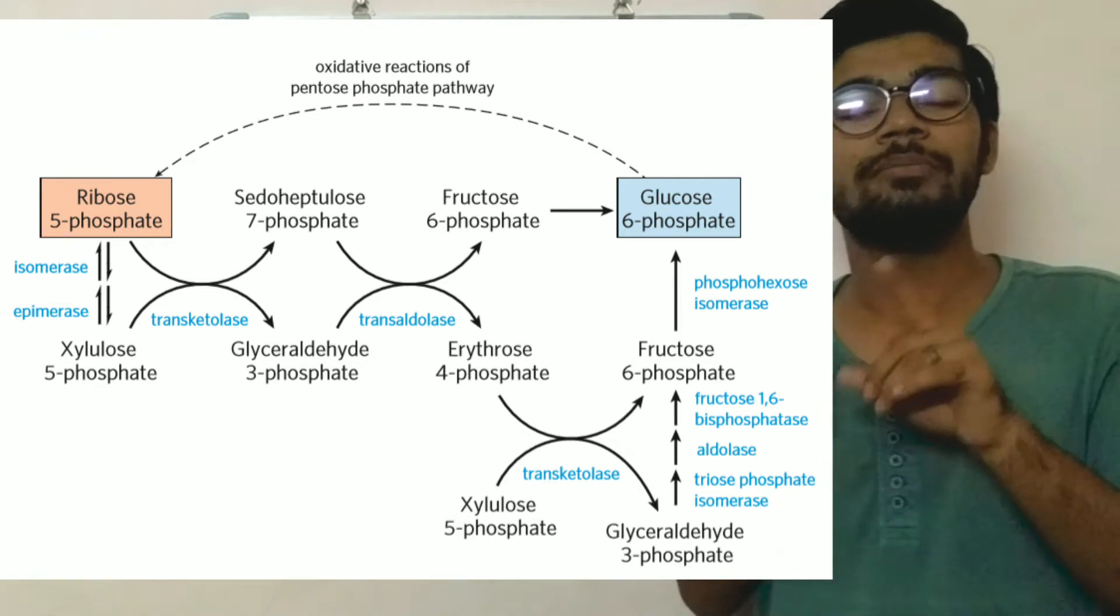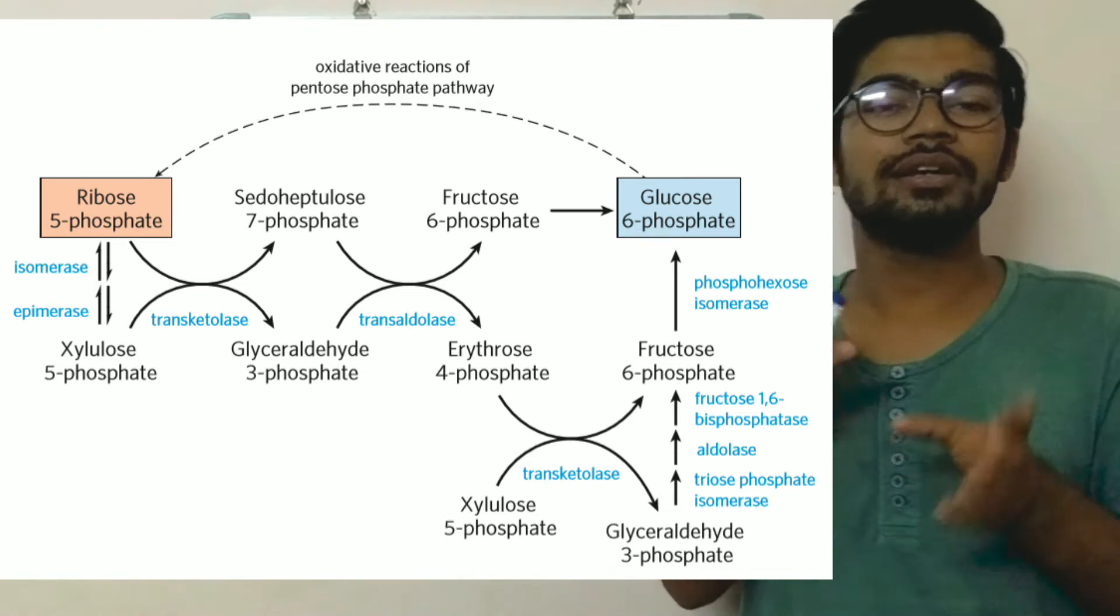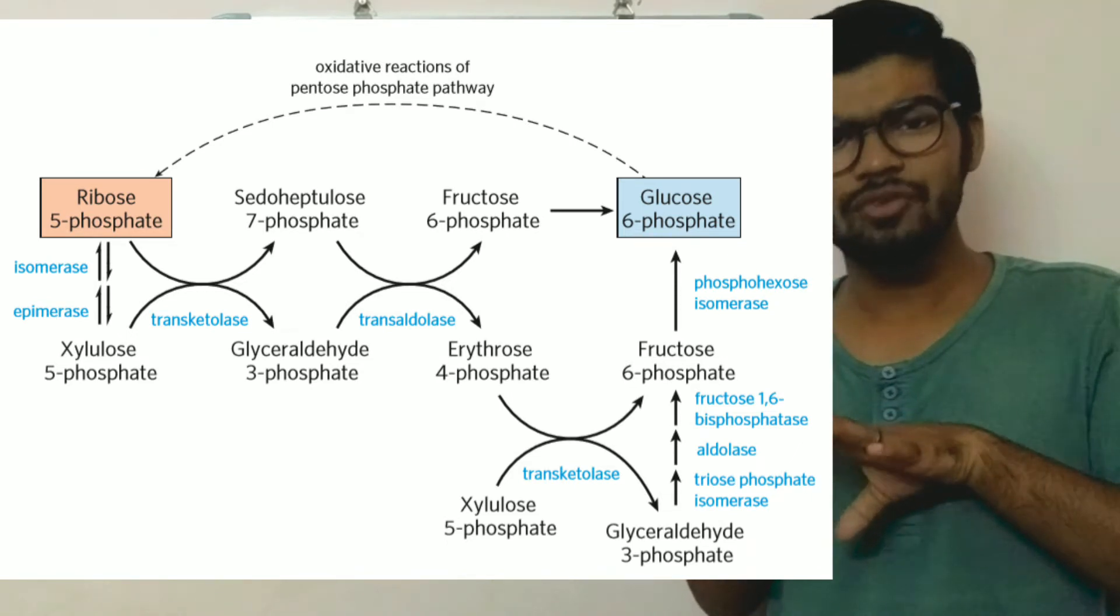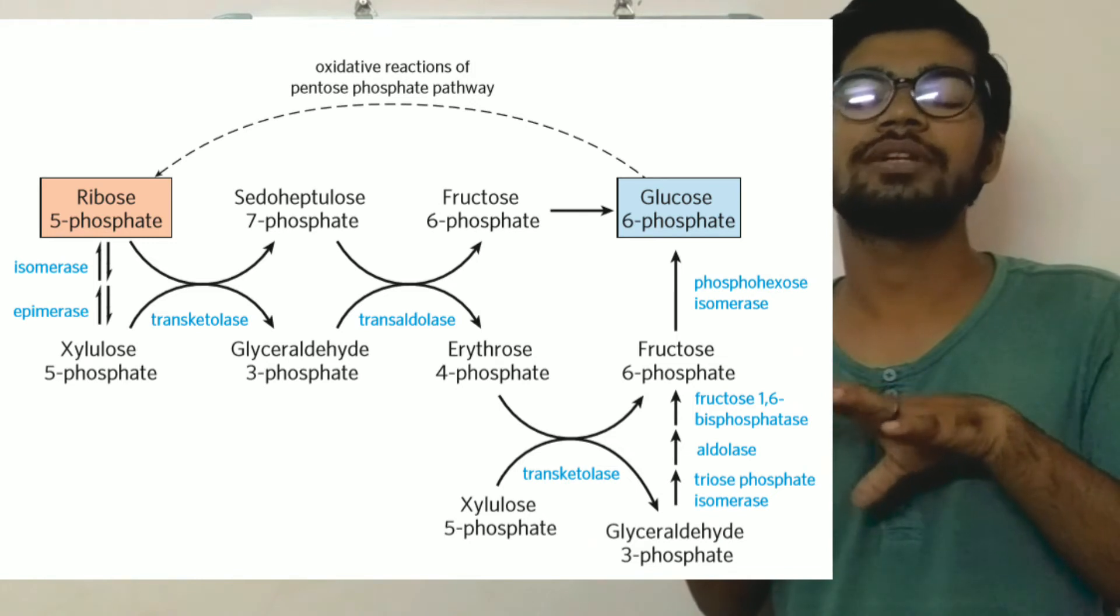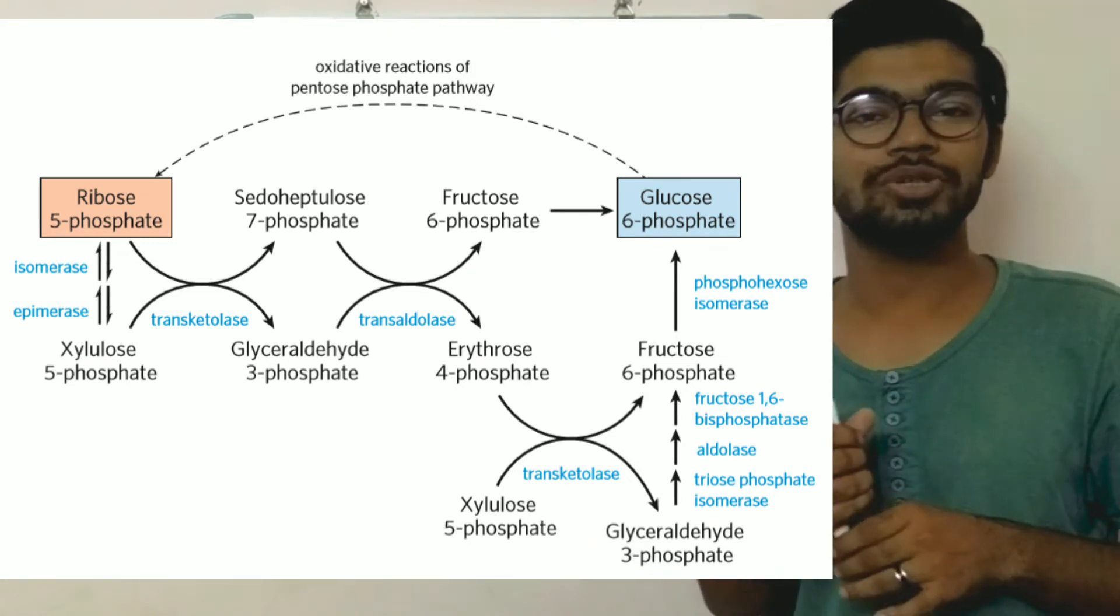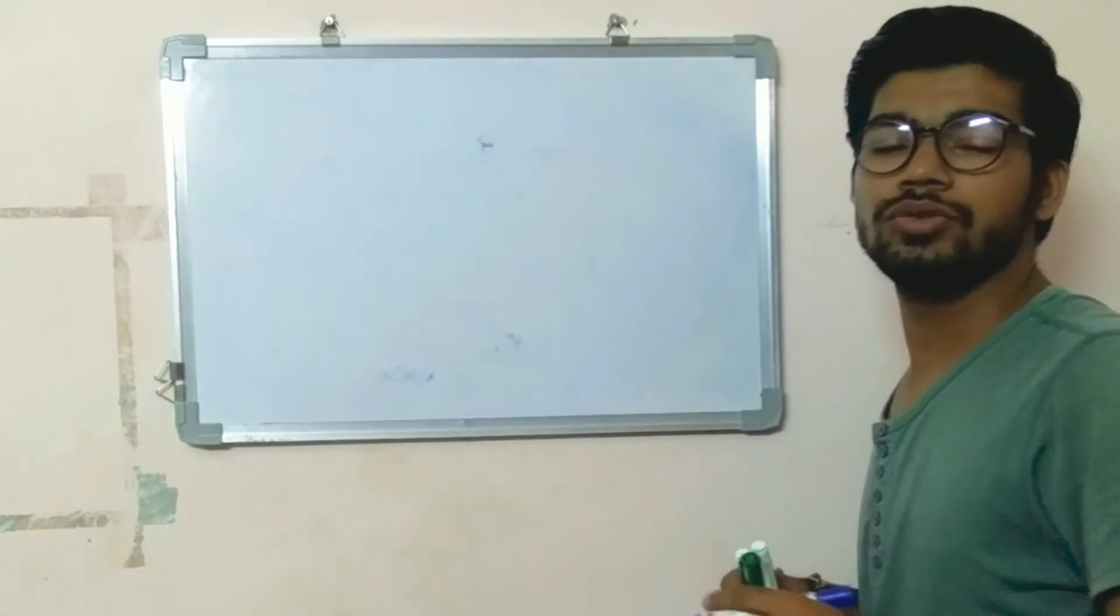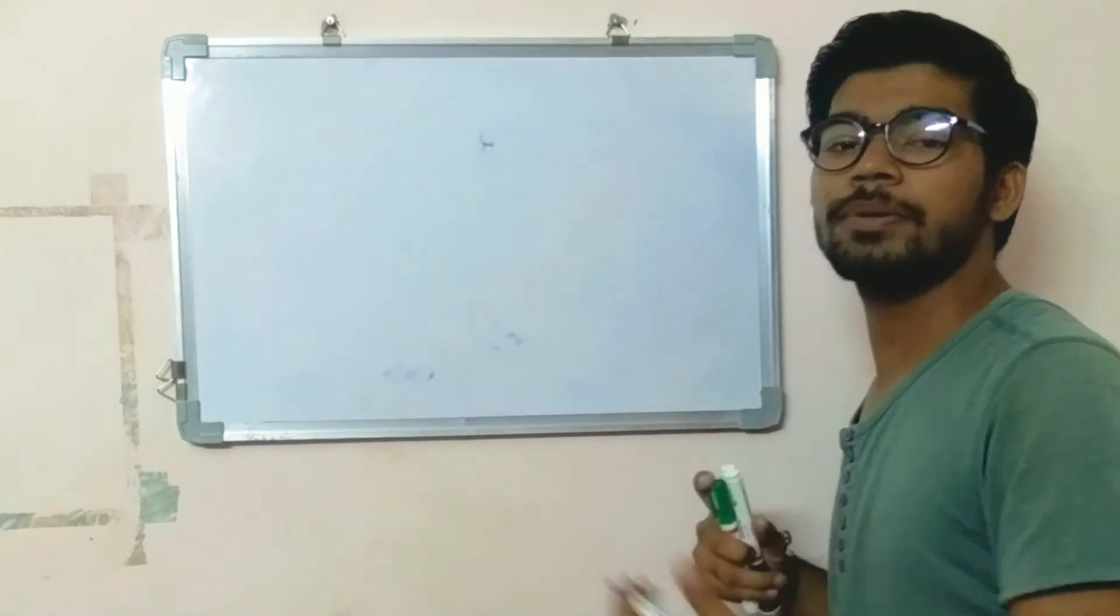By this pathway, using six molecules of pentose sugar, five hexose sugars are formed.